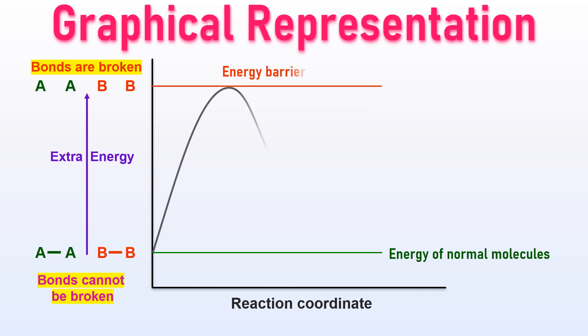As depicted on the screen, the reactant molecules must overcome an energy barrier in order to undergo a chemical reaction. The difference between the energy of normal molecules and this energy barrier is known as activation energy. It simply represents the additional energy required by the regular molecules to surpass the energy barrier. The energy barrier represents the minimum amount of energy that should be possessed by the molecules to undergo a chemical reaction, and this is normally referred to as threshold energy.